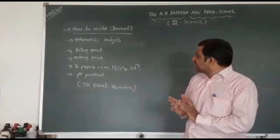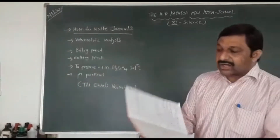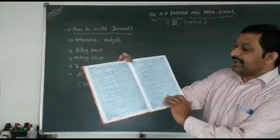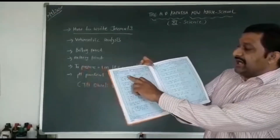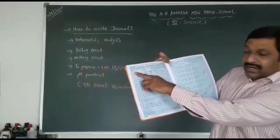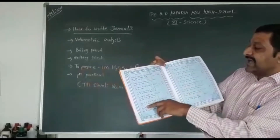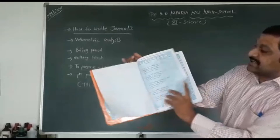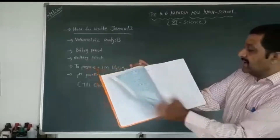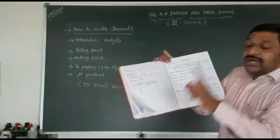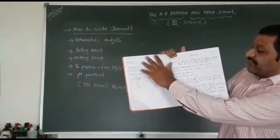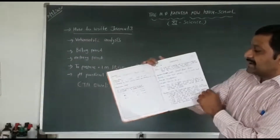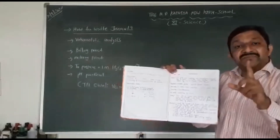In the volumetric section, you have to choose an interleaf journal. Here is your index — index number, then experiment name, page number, date of record, and signature. In an interleaf journal, one page is blank and the second one is a single line page.